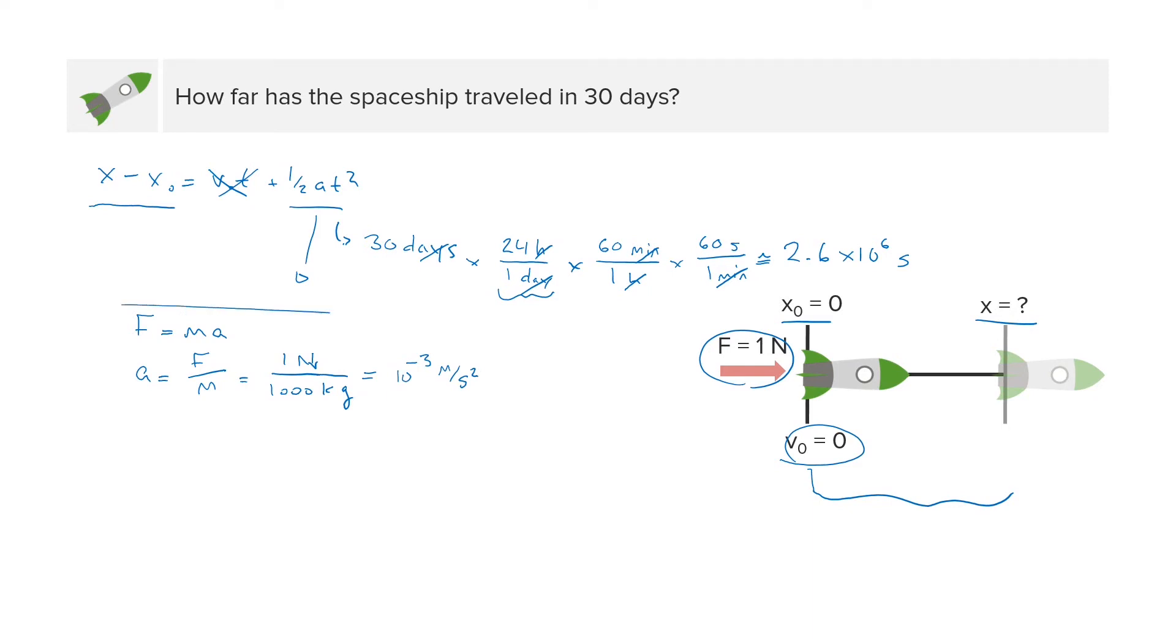So now that we have these two things, our acceleration from this sort of analysis and our time from this unit analysis, we can plug in and find the distance or the change in position of our object. Doing that, we now have the change in position, x minus x₀, where the initial position is zero, equals one half times the acceleration, 10 to the minus 3,